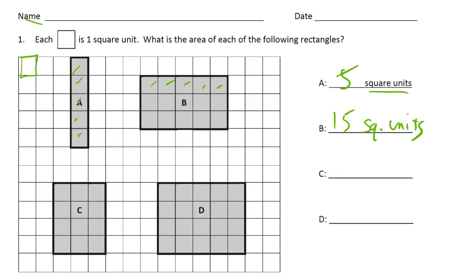C is one, two, three. It's four rows of three, which is 12.